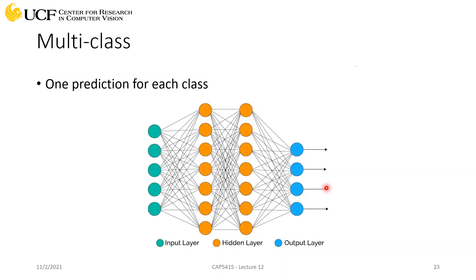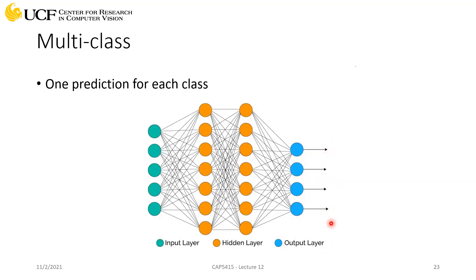The second key concept is softmax. When making multiple predictions for a classification problem, if you use sigmoid each output is independently mapped between zero and one — the network might predict high probability for multiple classes simultaneously, causing confusion. Softmax solves this: given a set of numbers, it converts them into probabilities ensuring that one class is highly active while suppressing the others. It's an activation function specifically designed for multi-class single-label classification.